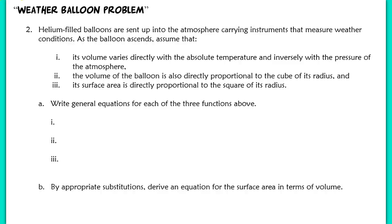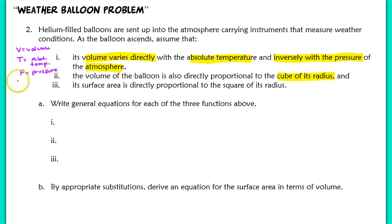Moving on to example 2, the weather balloon problem. Helium-filled balloons are sent into the atmosphere carrying weather instruments. As the balloon ascends, its volume varies directly with the absolute temperature and inversely with the atmospheric pressure. We define variables: V for volume, T for absolute temperature, P for pressure, R for the radius of the balloon, and A for the surface area of the balloon.